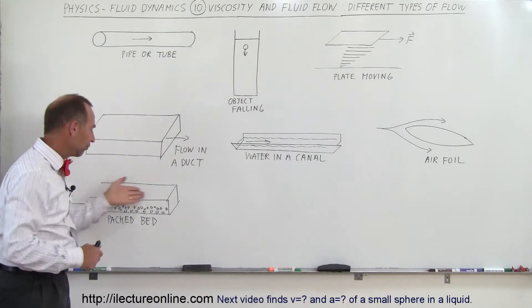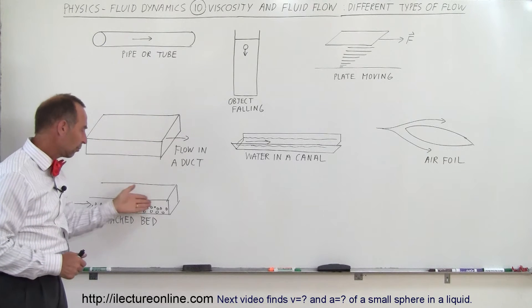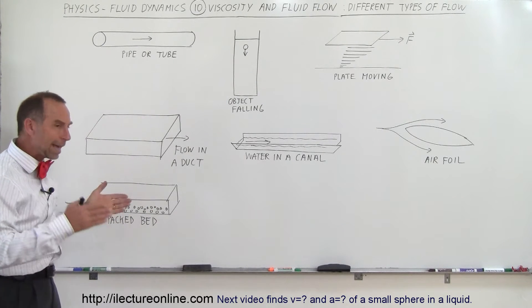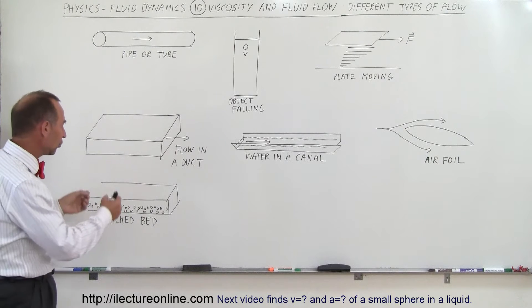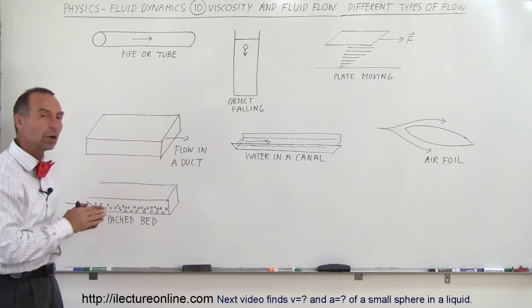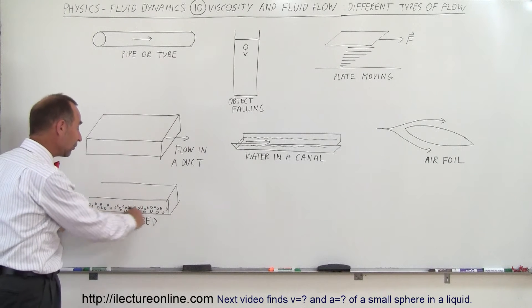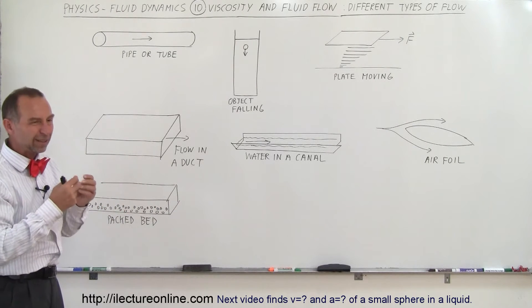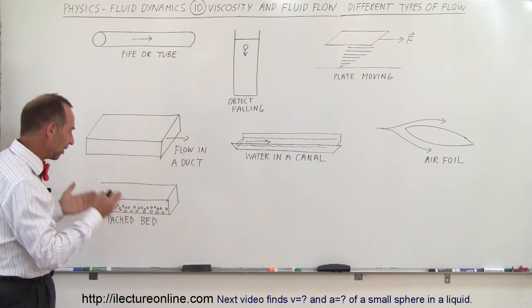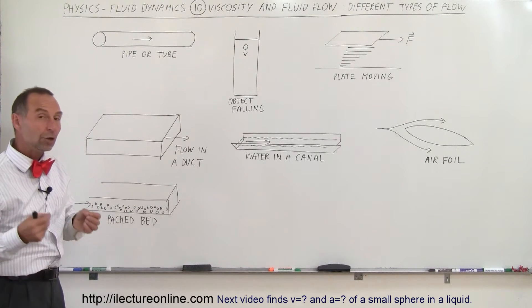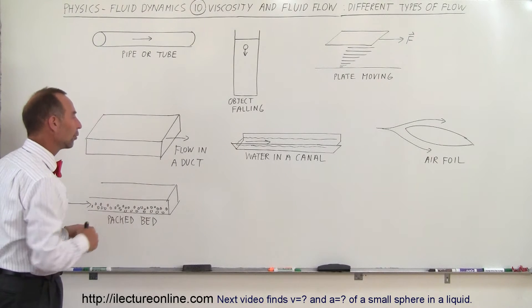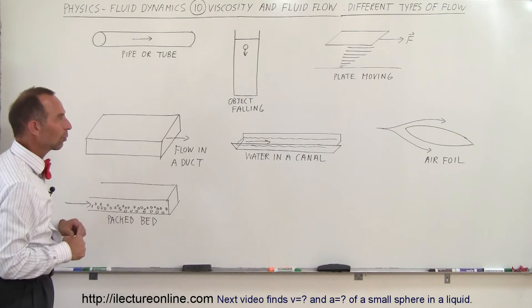And sometimes we have a fluid like water or some viscous liquid moving through a packed bed of nails or pebbles or something like that, obstructing the flow. Depending upon the density of those obstructions, the amount of space they take up versus the amount of space available for the fluid to flow, you will have various impacts on how the fluid will flow through a situation like that.